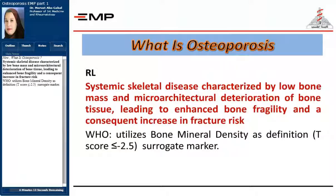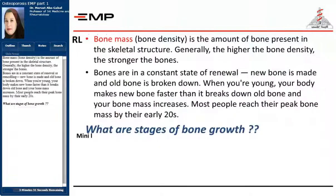Now, what is osteoporosis? It is a systemic skeletal disease characterized by low bone mass and microarchitectural deterioration of bone tissue, leading to enhanced bone fragility and a consequent increase in fracture risk. The World Health Organization utilizes bone mineral density as a definition surrogate marker, as we will see.